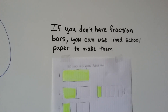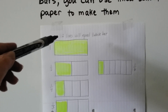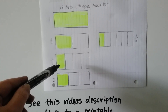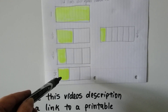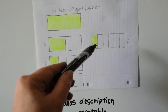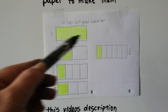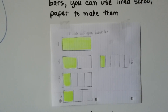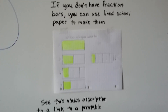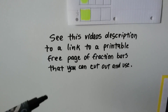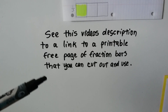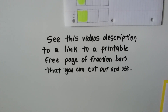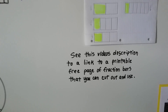If you don't have fraction bars, you can use lined school paper to make them. You can make twelve lines equal one whole bar — that way six lines would be half a bar, three lines would be one-fourth of a bar, four lines would be one-third, and one-sixth would be two lines. You'd have to make another whole set where ten lines is a whole bar. Or you could click on the video description, which has a link to a printable free page of fraction bars that you can cut out and use.